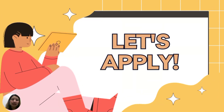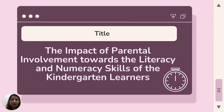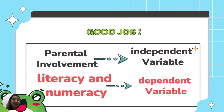Now that we understand the basics in formulating the statement of the problem, let us apply our learning. Let me provide you a sample research title: The Impact of Parental Involvement Towards the Literacy and Numeracy Skills of the Kindergarten. I will give you time to think which is the independent and dependent variable. Parental involvement is the independent variable. Literacy and numeracy is the dependent variable.